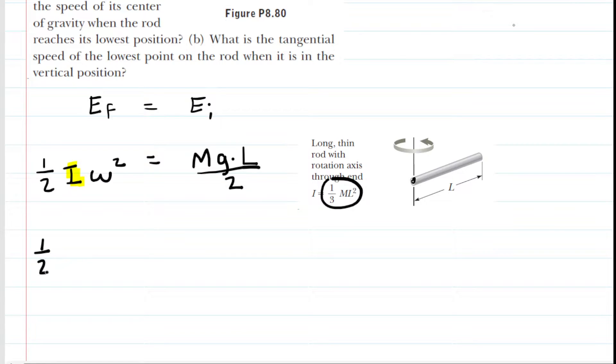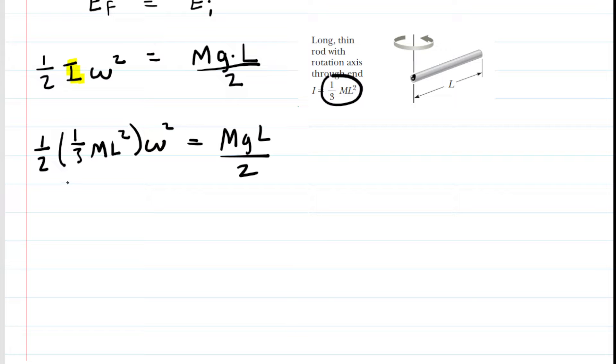So for this I, we're going to make that substitution. We're going to fill in one third times the mass of the rod times its length squared. And then we still have the omega squared on this side.